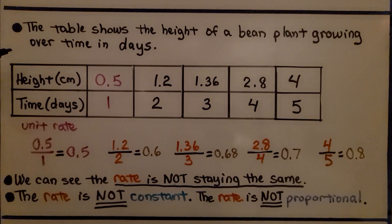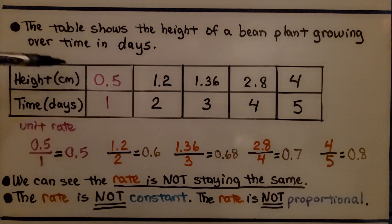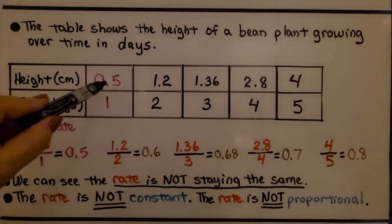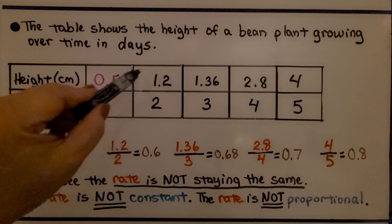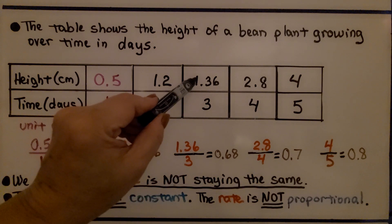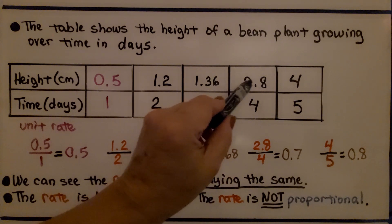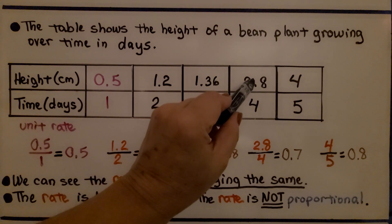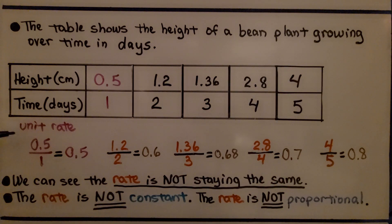This table shows the height of a bean plant growing over time in days. In centimeters, with one day, it's going to grow half of a centimeter. In two days, it's going to grow 1.2 centimeters. In three days, it'll grow 1.36 centimeters. And in four days, it will now be 2.8 centimeters tall. In five days, it'll be four centimeters tall. The unit rate is 0.5 over one. Its height is 0.5 of a centimeter in one day.